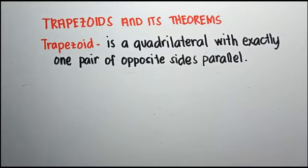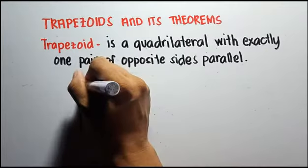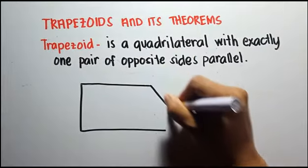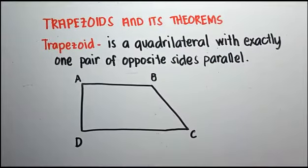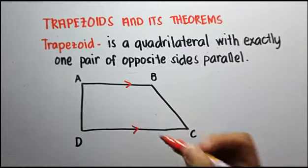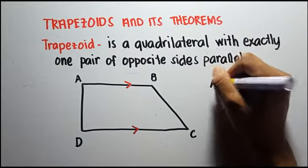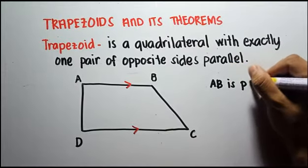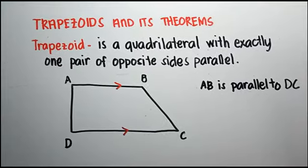Trapezoids and its theorems. A trapezoid is a quadrilateral with exactly one pair of opposite sides that are parallel. So if we have trapezoid ABCD, one pair of distinct sides are parallel — side AB and DC are parallel.